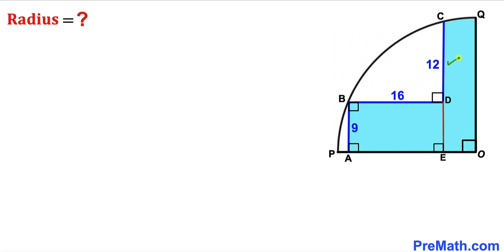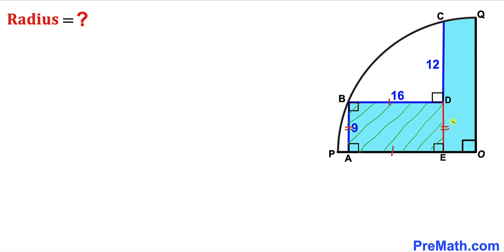In the first step, I have extended segment CD all the way to point E, and as a result we got rectangle ABDE. In this rectangle, side AB equals side DE, and side BD equals side AE. So side DE is 9 units and side AE is 16 units.